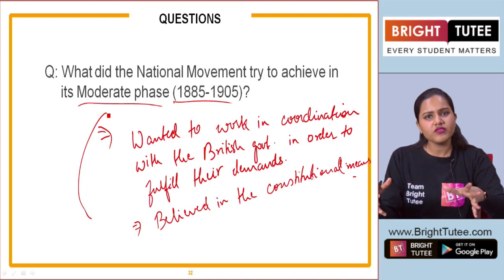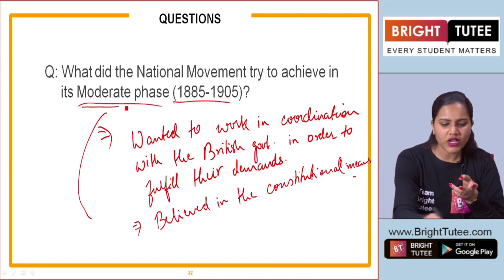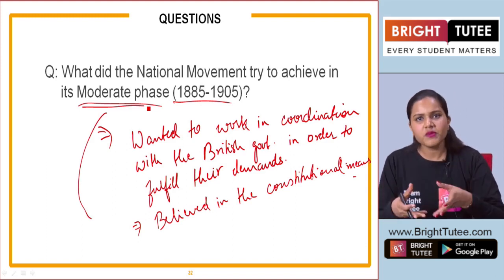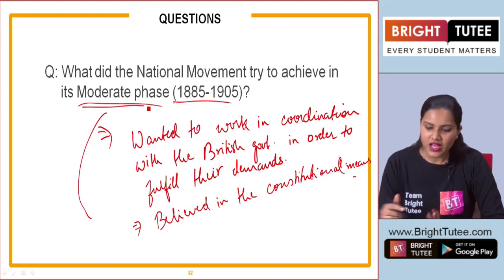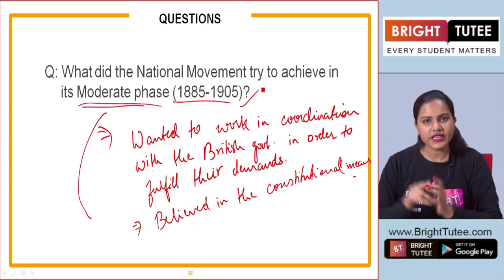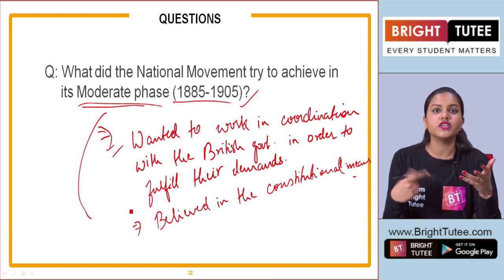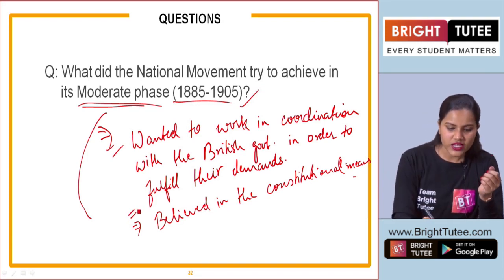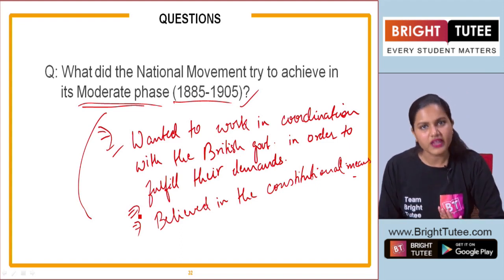These questions have essentially the same answers - the way you write may need to change based on how the question is framed, but the central ideas remain the same: the aims and beliefs of the moderates through which they were trying to exercise changes in India through the Indian National Movement.